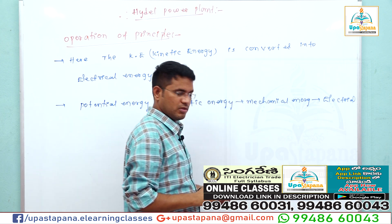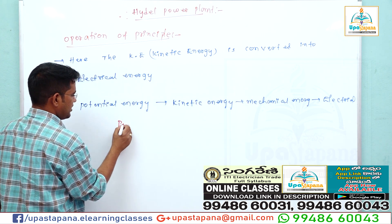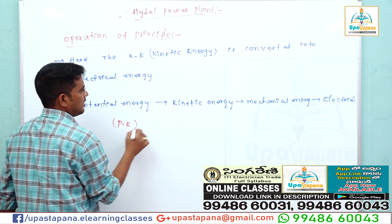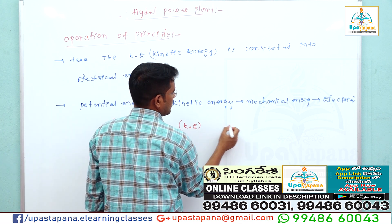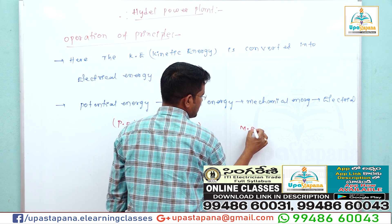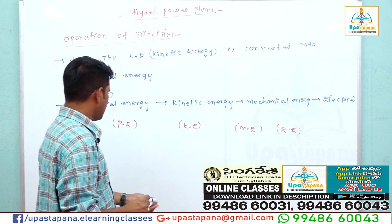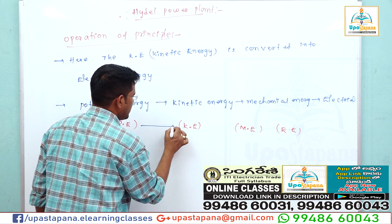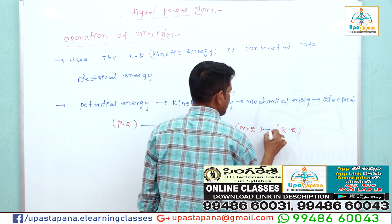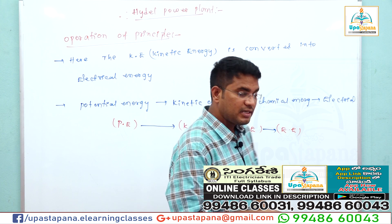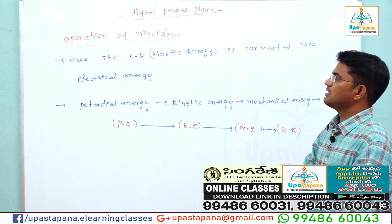So: potential energy → kinetic energy → mechanical energy → electrical energy. Potential energy to kinetic energy, kinetic energy to mechanical energy, mechanical energy to electrical energy. This is the operation of principle of a hydel power plant.